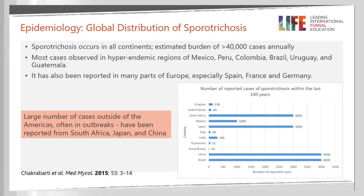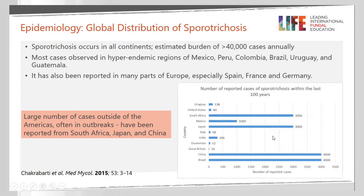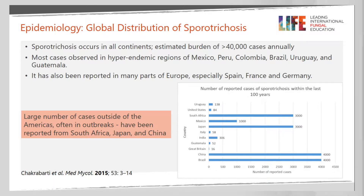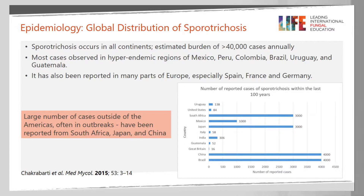The epidemiology of this disease — remember this is the most widespread endemic mycosis. In this table, you can see different reports. For example, Mexico has about 2,000 cases, and South Africa or Japan have reported about 3,000 cases. The countries with the most reports are China and Brazil. Brazil is related to this current outbreak. Other countries with important reports are Peru, Colombia, Uruguay, and Guatemala.